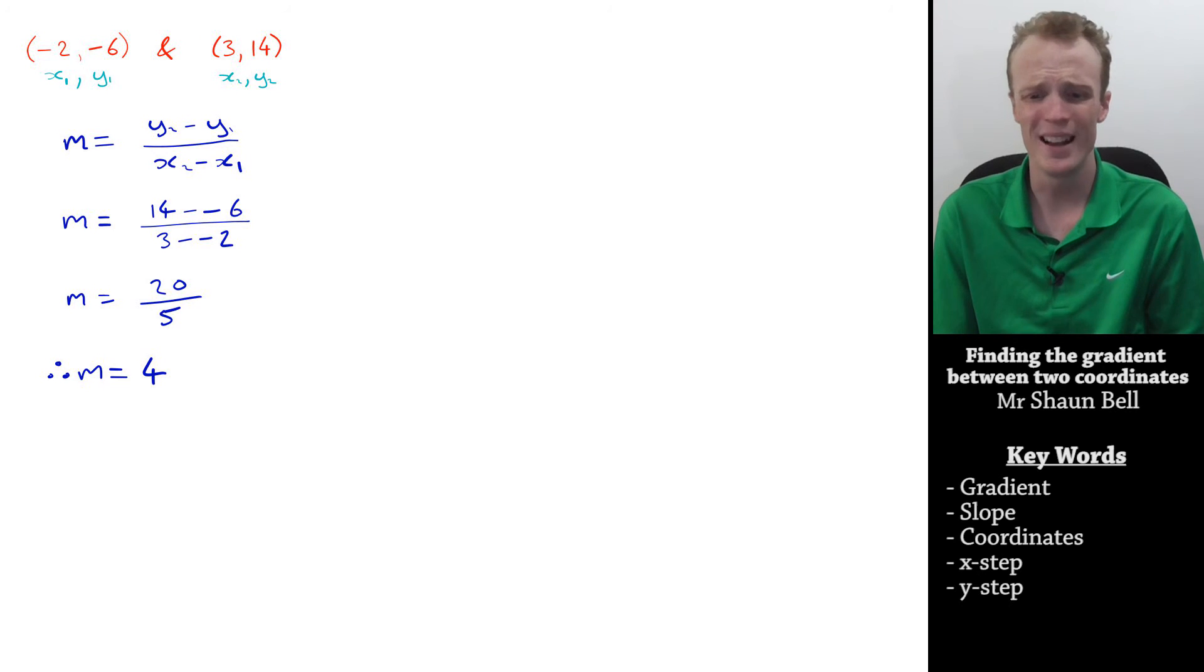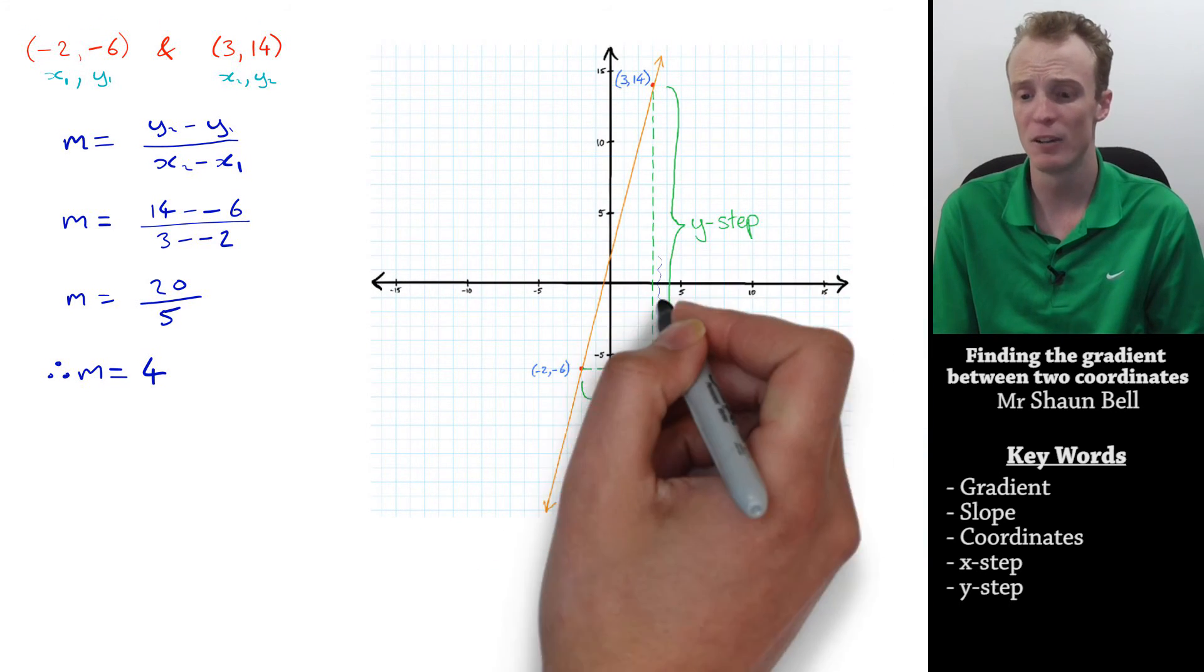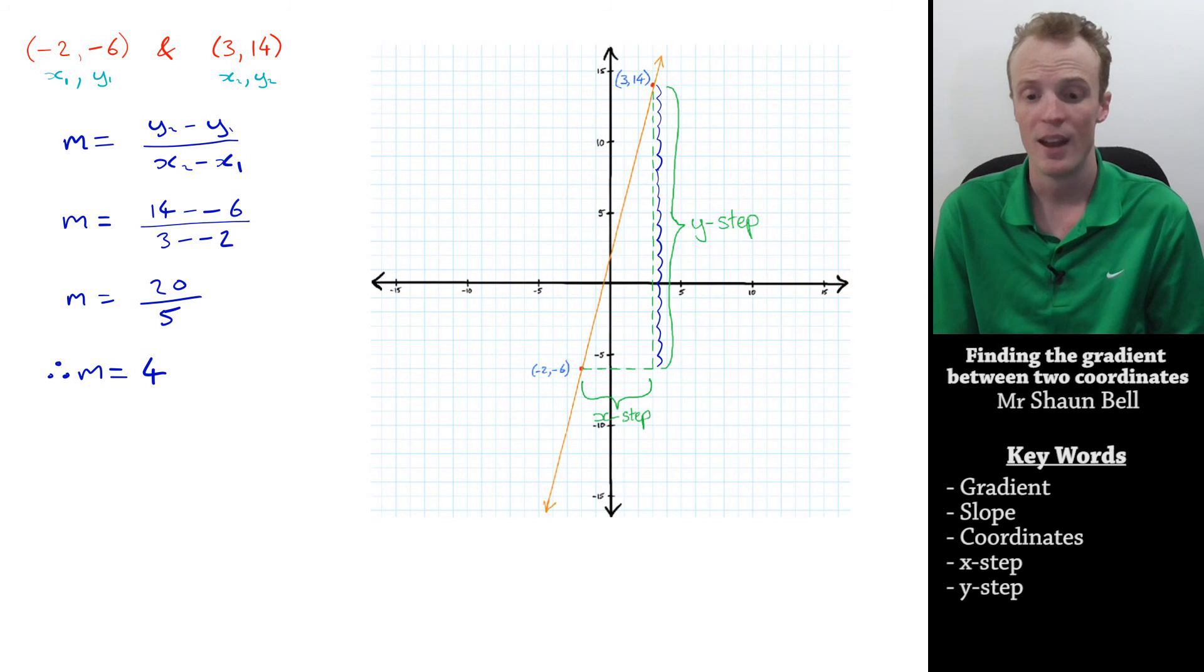But, we can actually check this by looking at a graph as we did before. So, here is the graph with these two coordinates. And, if we count the y step as shown, it is equal to 20. And, the x step is equal to 5. So, the gradient is equal to 20 over 5, which is what we found before. So, this rule here allows us to find the gradient without the need of drawing the graph.